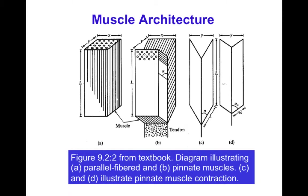The problem with putting all sarcomeres in parallel in a block is that the muscle would be wide and fat and wouldn't fit. The pennate arrangement allows you to put most sarcomeres in parallel and take advantage of symmetry to get more force generation at the expense of less shortening capacity, whereas the parallel fiber arrangement gives faster shortening at the expense of less maximum force-generating capacity.